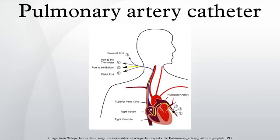The catheter is introduced through a large vein — often the internal jugular, subclavian, or femoral veins. From this entry site, it is threaded, often with the aid of fluoroscopy, through the right atrium of the heart, the right ventricle, and subsequently into the pulmonary artery.